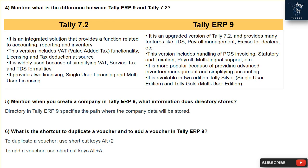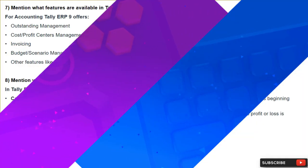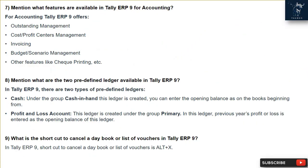Question 6: What is the shortcut to duplicate a voucher and to add a voucher in Tally ERP9? To duplicate a voucher, use shortcut keys Alt + 2. To add a voucher, use shortcut keys Alt + A.